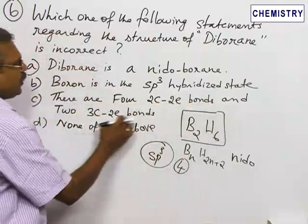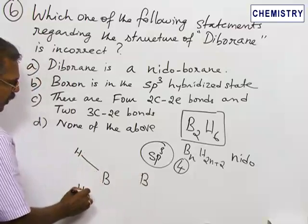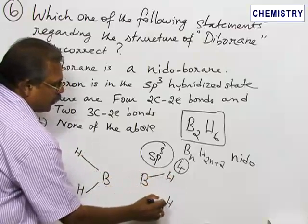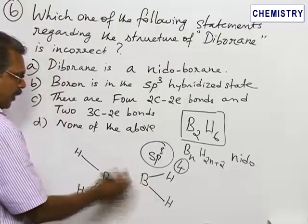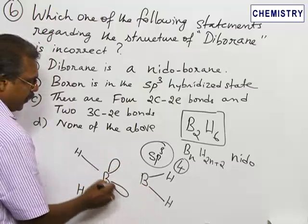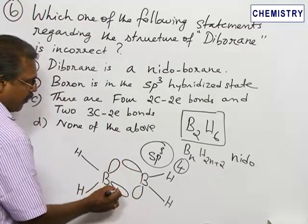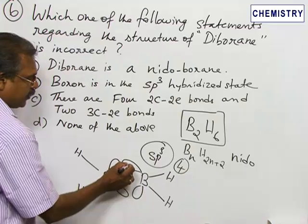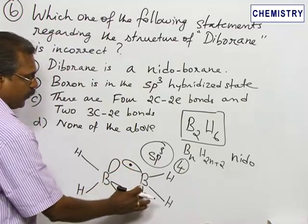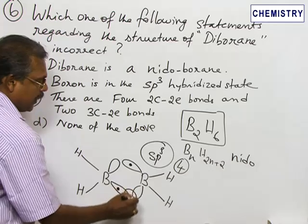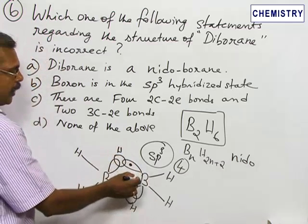There are four two-center two-electron bonds and two three-center two-electron bonds between the two borons. Four hydrogens are bonded to the two boron atoms with normal bonding. The remaining two sp³ hybrid orbitals — one with an electron and one empty on each boron — overlap with the spherical orbital of the bridging hydrogen atom. This forms the banana bond, lying above and below the plane containing the two boron atoms.